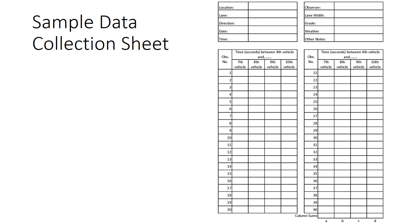Here's an example of a sample data collection sheet. Important information at the top includes the date, location, time, and observer. You'll have rows for your various observations, recording the seconds between the fourth vehicle and either the seventh, eighth, ninth, or tenth vehicle. For each row you'll only have one entry — you wouldn't record multiple columns — and that single value is what you use for the analysis.